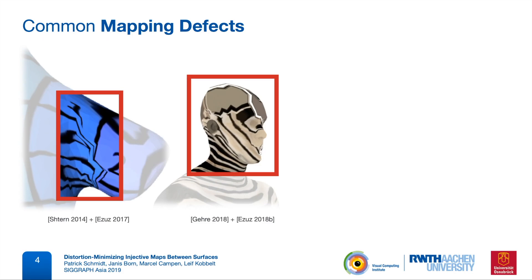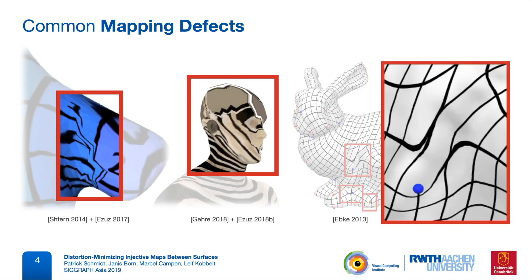Here these are just visual artifacts, but when we are for example mapping a mesh structure from one surface to another, such a defect can immediately invalidate the result.